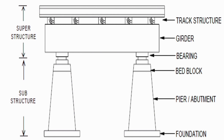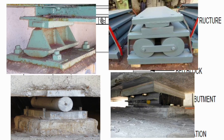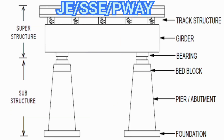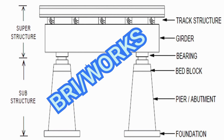Bearings, girders, and track structures are called superstructures. Various types of bearings are available — rollers, rockers, and sliding bearings are some of them. Inspection and maintenance of track structure is done by JNSSE of Permanent Way, and substructure and superstructures are inspected and maintained by the works and bridge department based on importance.